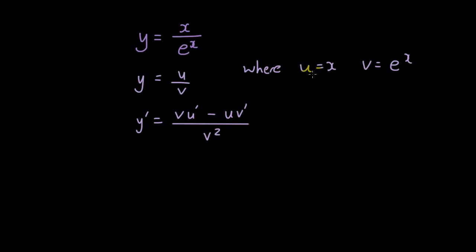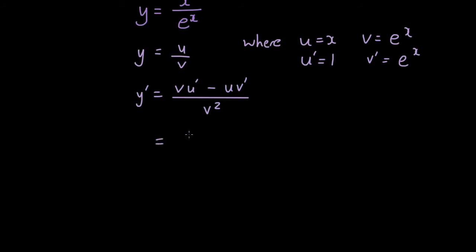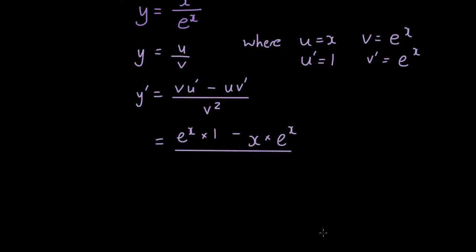So that means we are going to differentiate u and v separately. So u' — differentiate x gives you 1. Differentiate e to the power of x gives you e to the power of x again. So let's substitute them into the formula. So I have e to the power of x times 1, minus x times v' which is e to the power of x, divided by v squared — v squared is e to the power of x, squared.